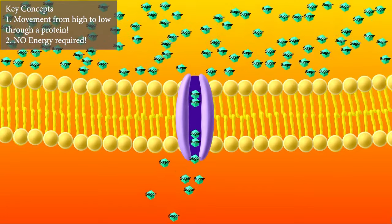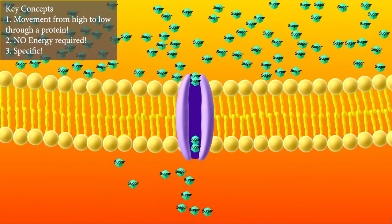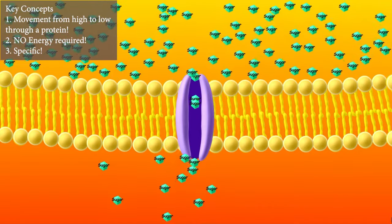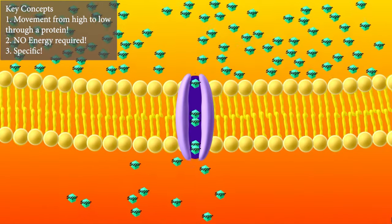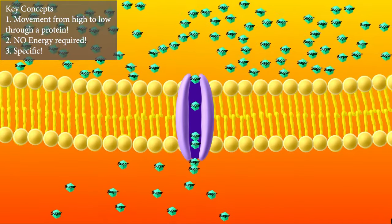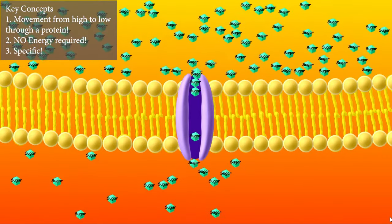Three, proteins that do facilitated diffusion are specific to particular substances. So a protein that allows glucose through doesn't usually let other substances through. Instead, different proteins will be used to transport each substance.